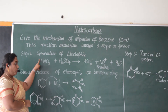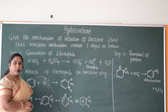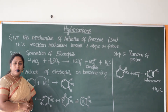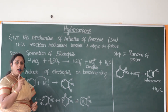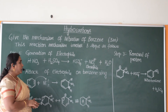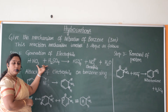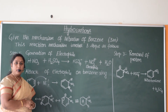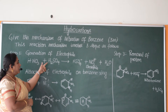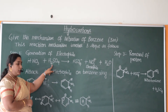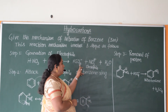Step 1: Generation of electrophile. In the nitration of benzene we need to take what is called the nitrating mixture — a mixture of concentrated nitric acid (HNO3) and concentrated sulfuric acid (H2SO4). It is this mixture which helps in the process of nitration to occur. When concentrated nitric acid combines with concentrated sulfuric acid, it helps in generating the electrophile and nucleophile.